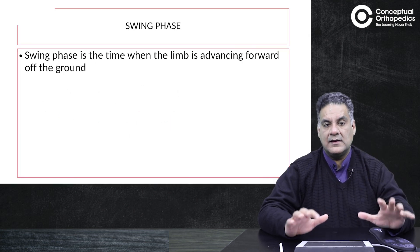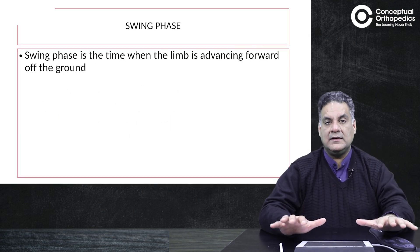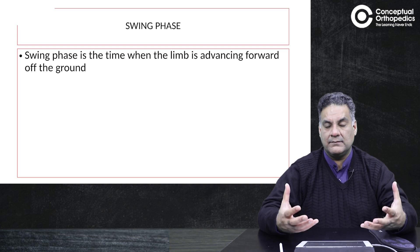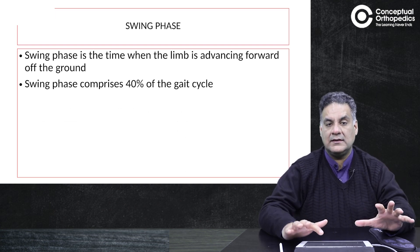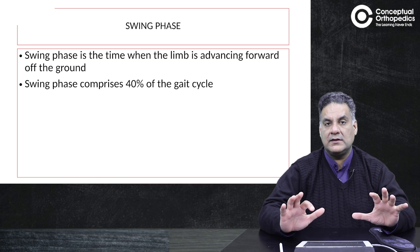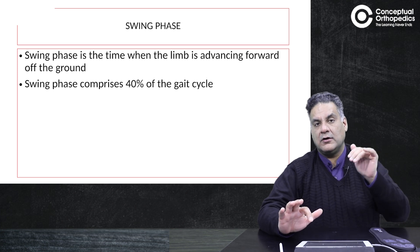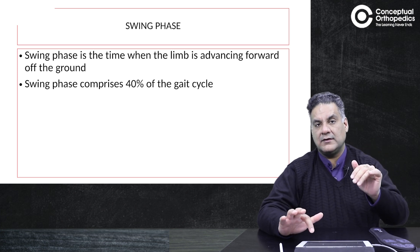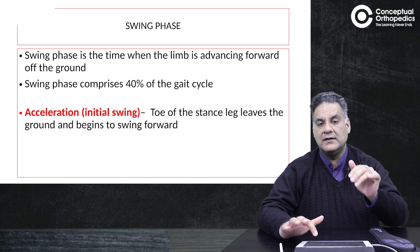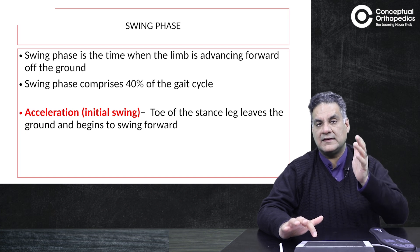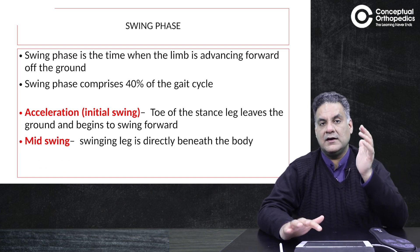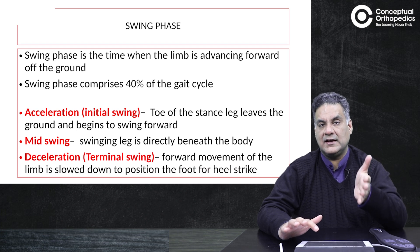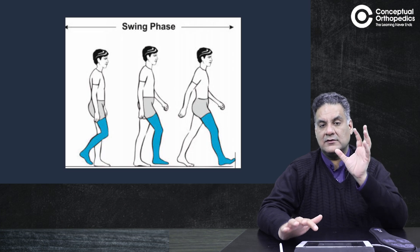The swing phase covers forty percent of the gait cycle. It is divided into three parts: the initial swing, where the limb goes from toe off up to the level of the body; the mid swing, where the limb passes by the side of and crosses the body; and the terminal swing, where the heel is preparing to strike and complete the gait cycle.